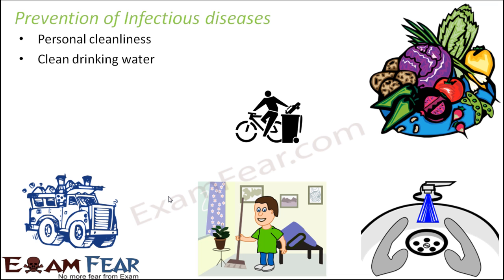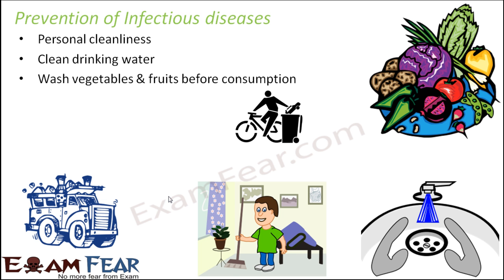Clean drinking water needs to be maintained. In many slums and swampy areas, the drinking water and excreta are not far away from each other, making it very possible that the drinking water gets contaminated. Also, wash vegetables and fruits before consumption, as they might have worms or insects on them.